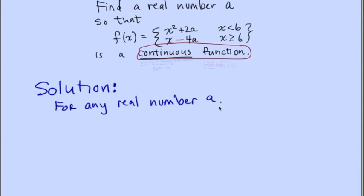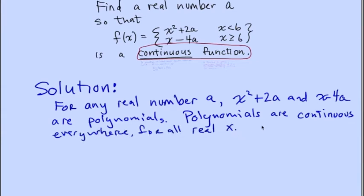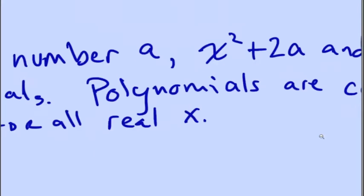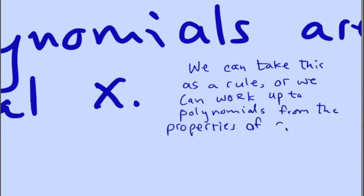For any real number a, x squared plus 2a and x minus 4a are polynomials. Polynomials are continuous everywhere for all real values of x. We can take this as a rule, or we can work up to polynomials from the properties of continuous functions in your textbook.